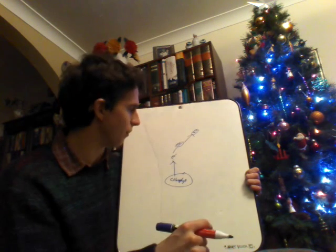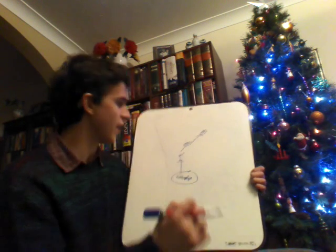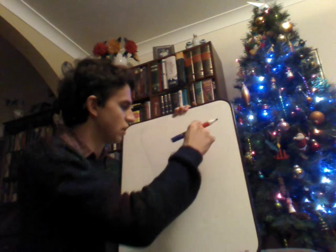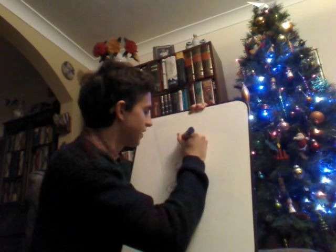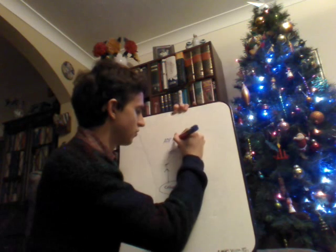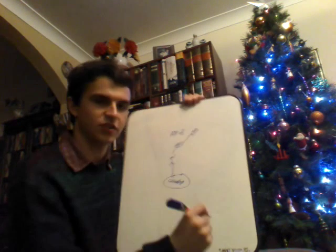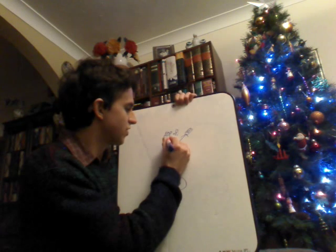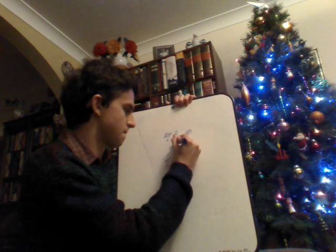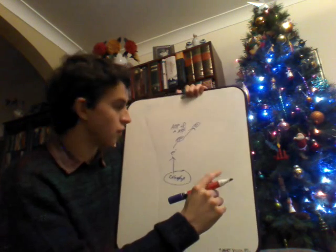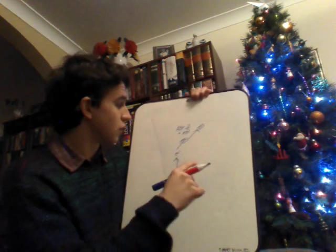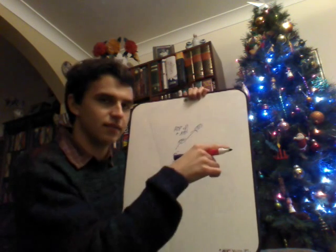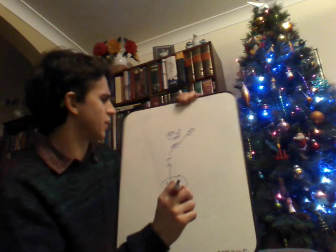As these electrons move along the series of electron carriers, they lose more and more energy. That energy is used to combine ADP with an inorganic phosphate to create ATP, which will be used later in the light-independent reaction.